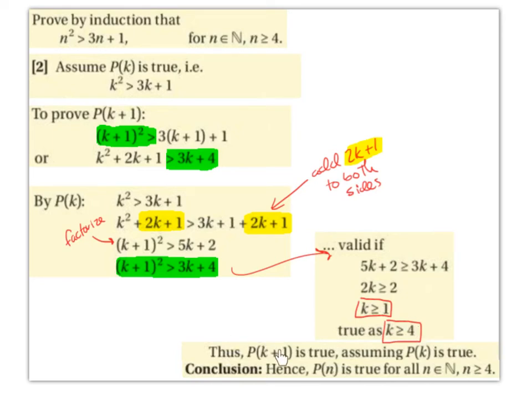Thus P(k+1) is true assuming P(k) is true. Conclusion: hence P(n) is true for all n ∈ ℕ where n ≥ 4.